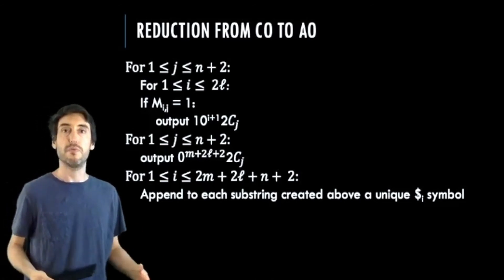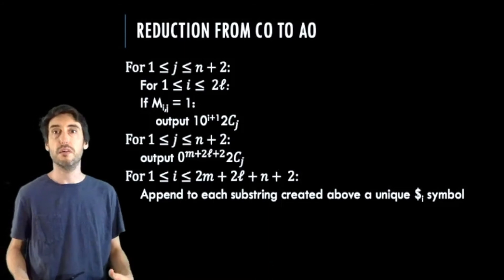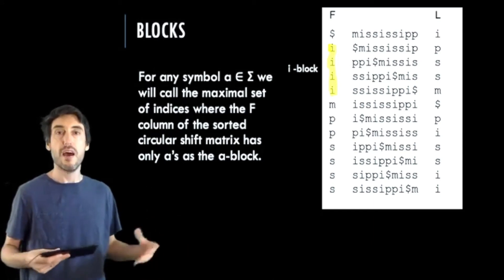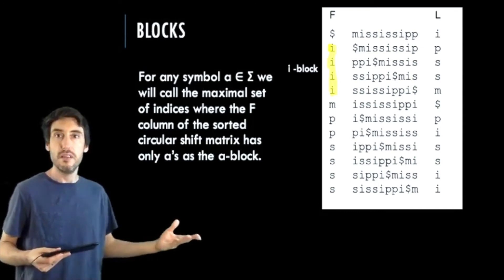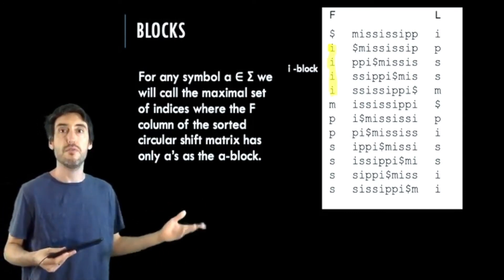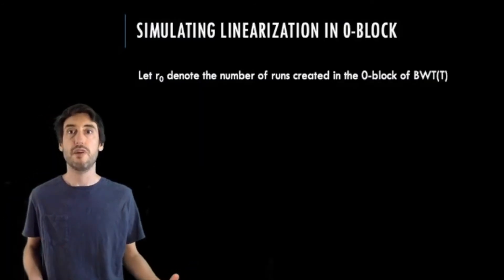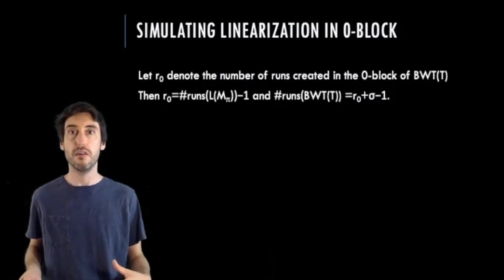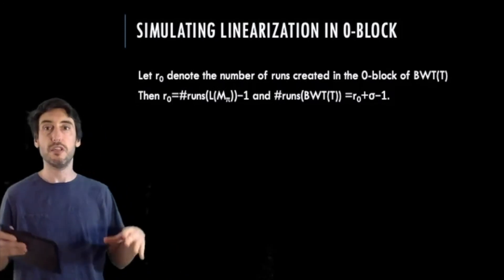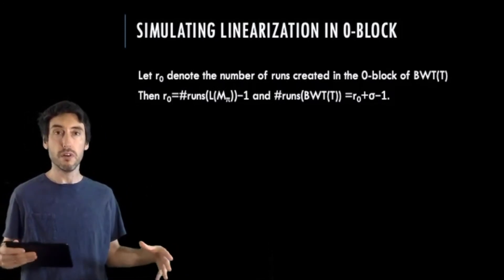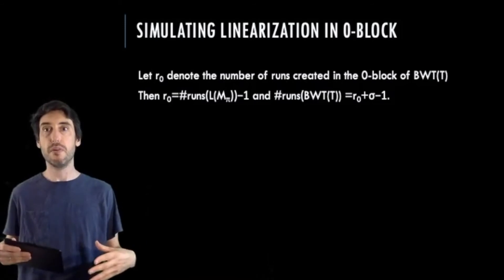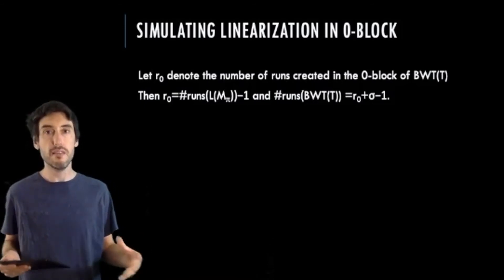So what is the design of this string supposed to accomplish? Well, let me introduce a little bit of terminology. We call the set of indices in the F column that has all the symbols A as the A block. For example, in this figure, the I block of Mississippi would be the indices 2 through 5. The string we just described is constructed in order to simulate the linearization of m within the 0 block of its BWT. To be more exact, if we let R0 be the number of runs created in the 0 block, then we have that R0 is the number of runs in the linearization of m minus 1, and the overall number of runs will be R0 plus sigma minus 1. These two facts cause optimal alphabet orderings to correspond to optimal column orderings, and I will try to hint at why this happens.